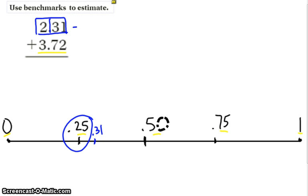So therefore, what I'm going to do is make 2 and 31 hundredths, 2 and 25 hundredths.